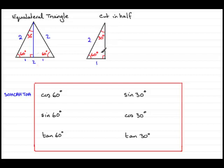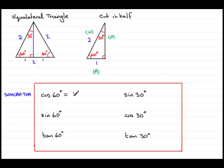If we take this triangle and work with 60 degrees, the opposite side to 60 degrees is labelled O, the side opposite the right angle is the hypotenuse, and the remaining side is the adjacent. So the cosine of 60 degrees — adjacent over hypotenuse — is 1 over 2, which gives a half.